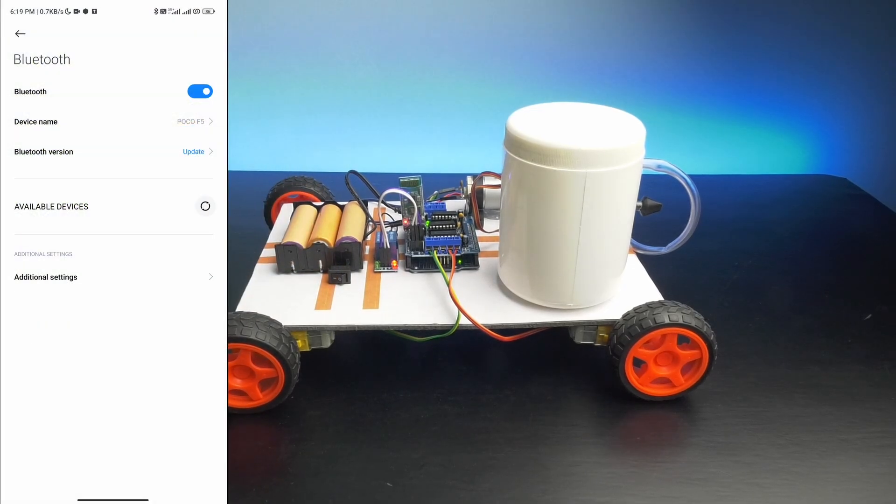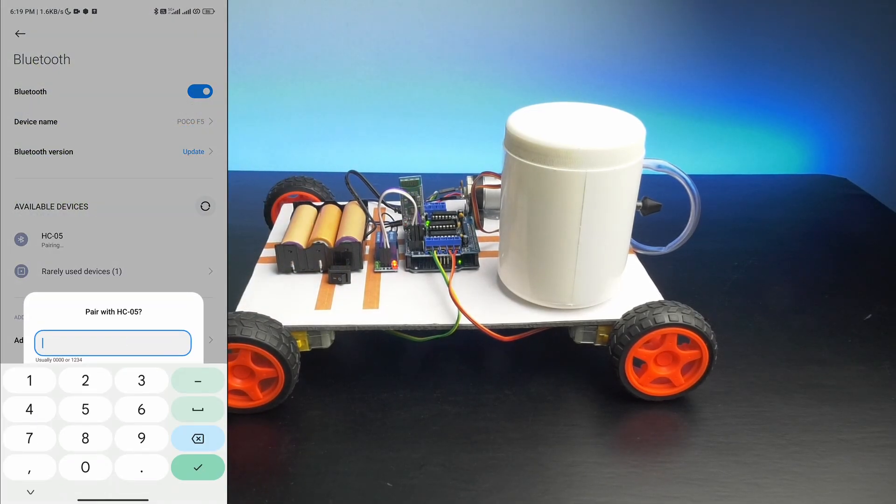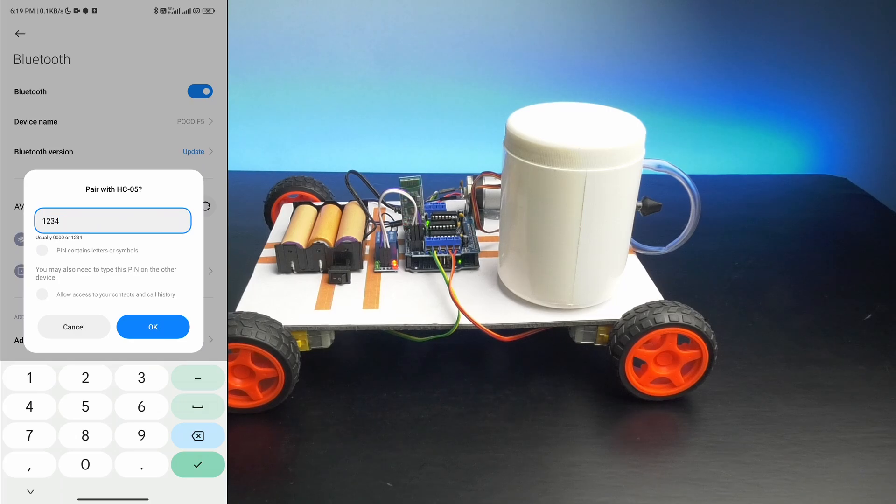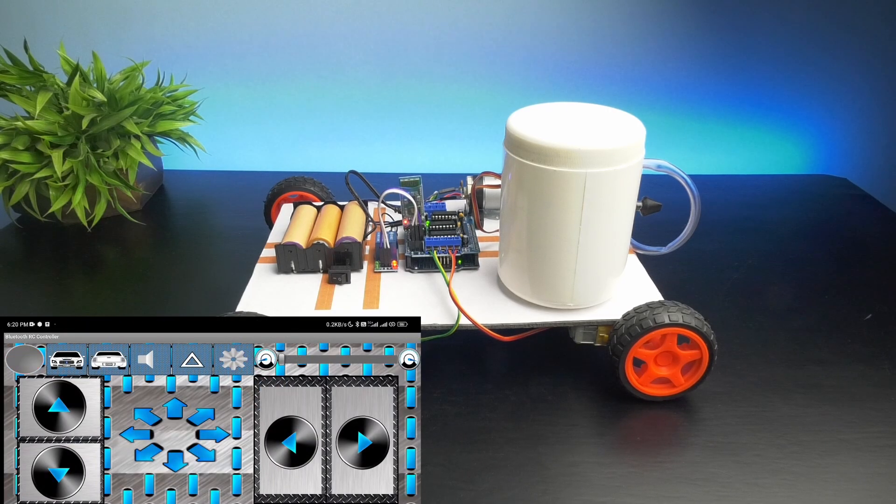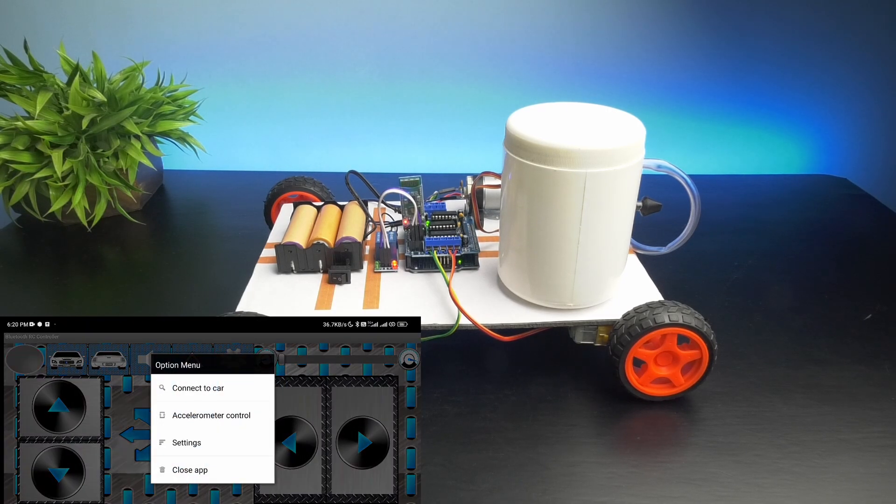Now, let's test it. First, pair up the bluetooth module using the phone's bluetooth setting. After that, open the bluetooth controller app and select the paired HC-05 module.